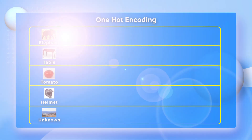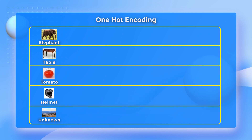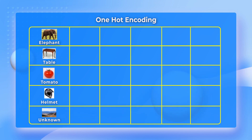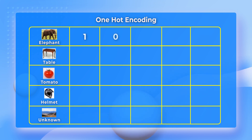The one-hot encoding for the above class labels will use a vector whose length is the same as the number of classes, which in this case is 5. In this representation, we set only one element of the vector to 1 for a particular class. For example, we represent the elephant class using 1, 0, 0, 0, 0. The first element is 1 and the rest are 0.